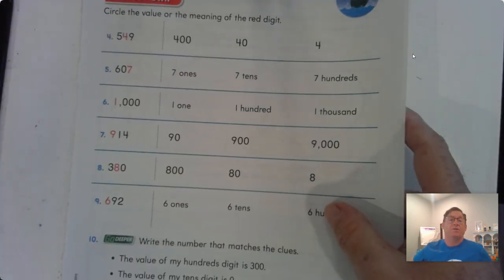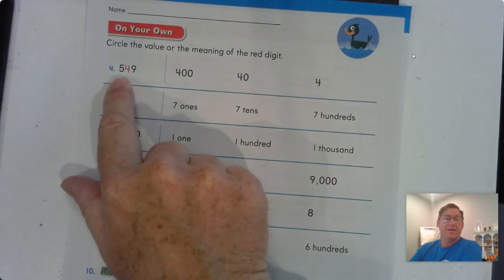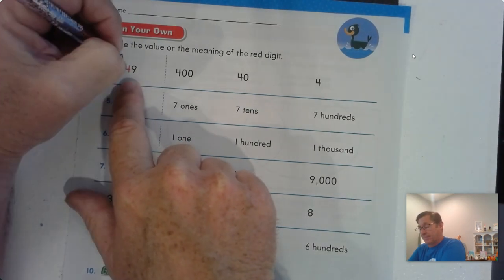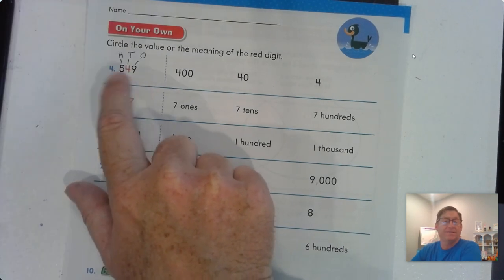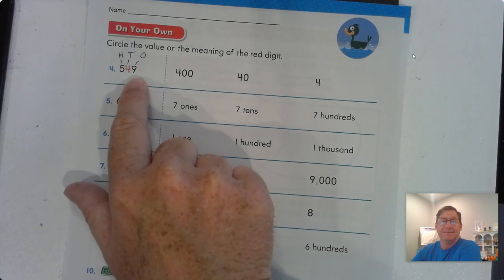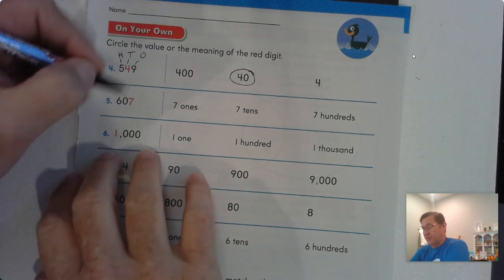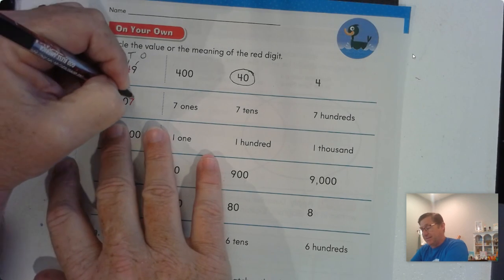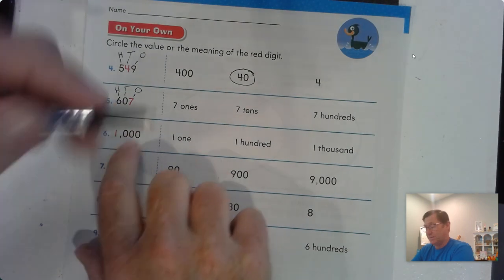Let's look at page 75, continuing with identifying the value of the indicated place. Five hundred forty-nine: five in the hundreds place, four in the tens place, nine in the ones place. Six hundred seven: six is in the hundreds place, zero is in the tens place, and seven is in the ones place. So seven in the ones place means seven ones is seven.